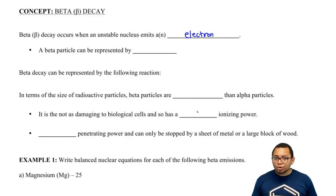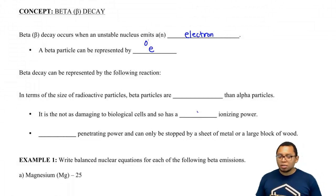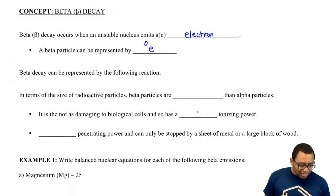Now we're going to say a beta particle can be represented by E for the electron. Electron here is much smaller than the other two subatomic particles, so the atomic mass can just be understood as zero. And here we're going to say its atomic number is negative 1.